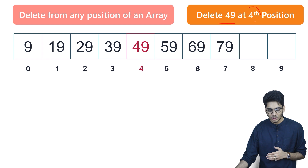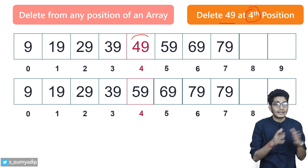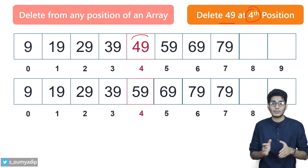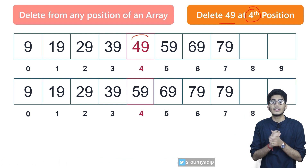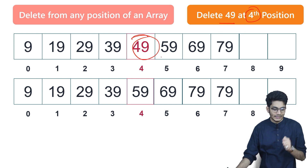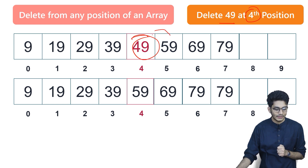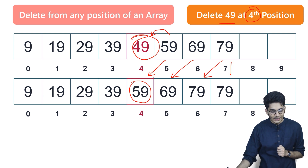Now let's say we'll delete 49 from the fourth position. In this case the index is four. For deleting any element from the middle or first position — I'll talk about the general algorithm — but for deleting this 49, we have to make a shift. We have to replace this 49 with 59.